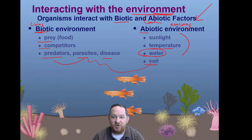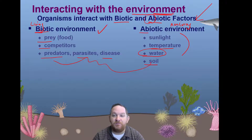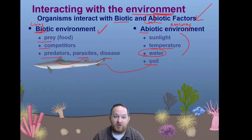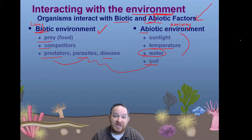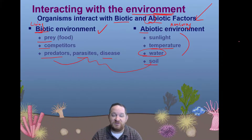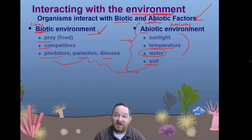So we've got some fish here — that would fall under the biotic environment. Looks like we've got a shark coming through — maybe that's a predator, also under the biotic environment. Oh, looks like we got a little eel down there too. All of those examples interacting with this environment fall under the biotic. But don't forget, the abiotic factors can be just as important as well, because they affect what can be in the environment.